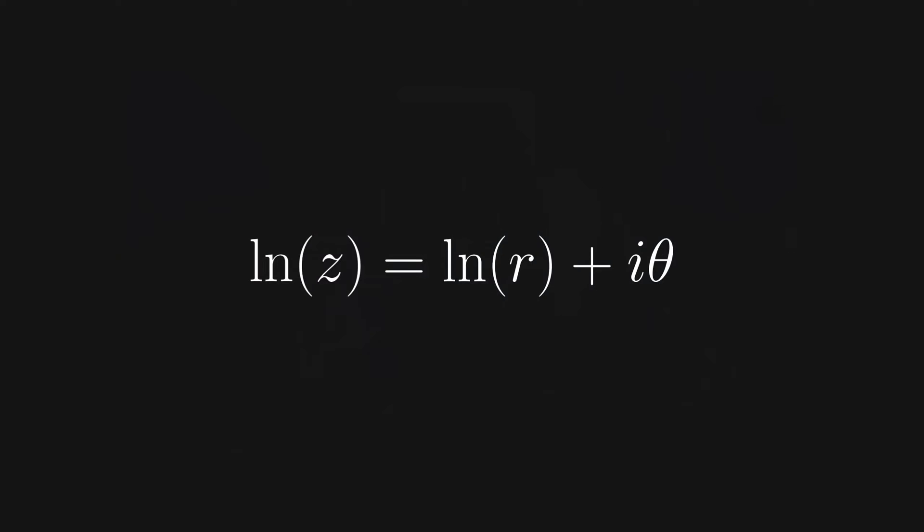By this point, most of you will be pretty happy with what we've done so far, but there is a slight caveat. What if we add a multiple of 2 pi to theta? Geometrically, adding 2 pi to any angle is like multiplying by 1. You end up in the same place.